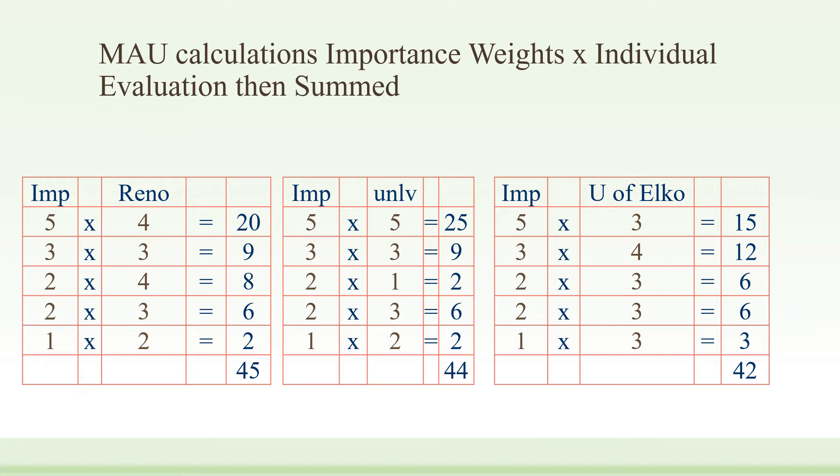In terms of placement, importance was two. Reno scored four, so they get eight. In terms of atmosphere, importance was two and Reno scored three for six. For class sizes, importance was one and Reno scored two, for a total of 45 points. Compared to UNLV, which gets 44 points, and University of Elko with 42 points. So in this case, Reno State is the preferred alternative, with UNLV a close second and the University of Elko third.